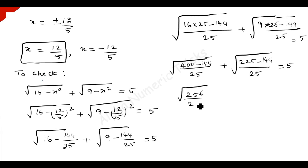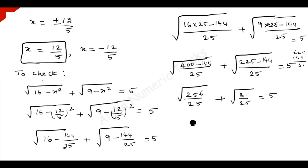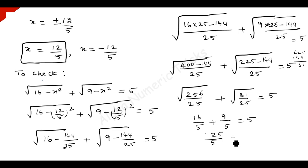400 minus 144 is 256, so we have square root of 256 over 25, plus 225 minus 144 is 81, so square root of 81 over 25 is equal to 5. That gives 16 by 5 plus 9 by 5, which is 25 over 5, equal to 5. So 5 is equal to 5. Therefore x equal to 12 by 5 is one root.